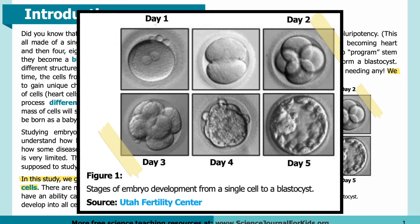Here in Figure 1 you can see the stages of embryo development from a single cell to a blastocyst. The image at the top left is on day one, before the cell has started dividing. By day two, seen in the upper right, you can see four cells inside the membrane. By day five, seen in the lower right, you can see the outer layer of cells forming the blastocyst.